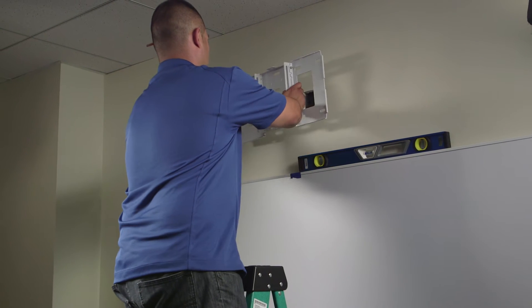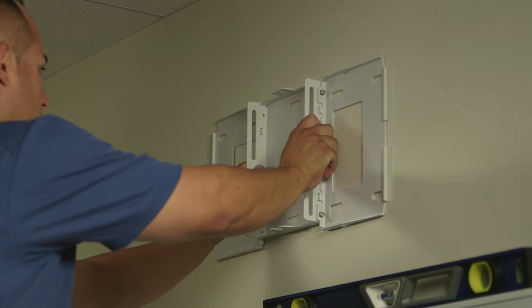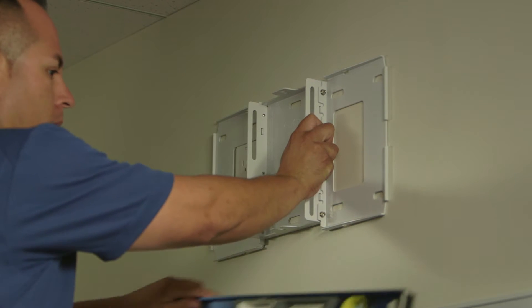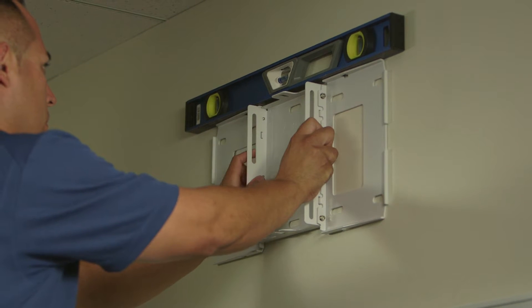Once we have the wall plate ready, we will attach it to the wall in the position where we had earlier placed the template sheet. For the purposes of this video, we have already completed the cutouts for power and cabling.